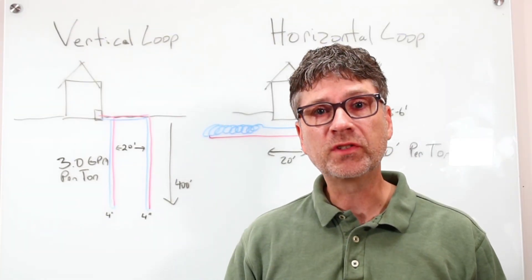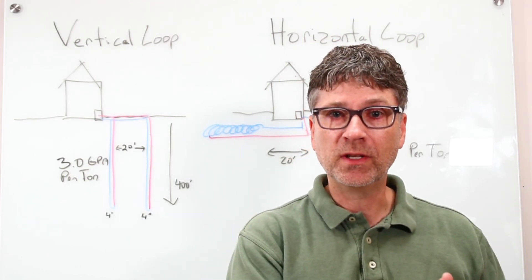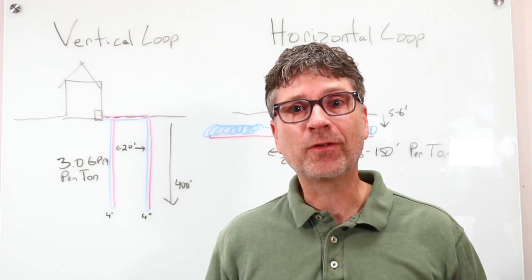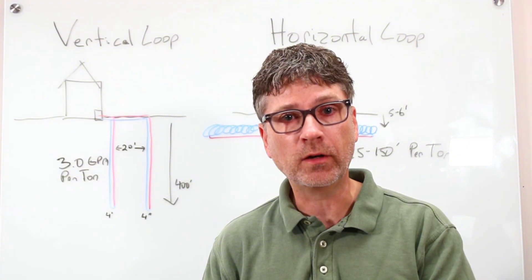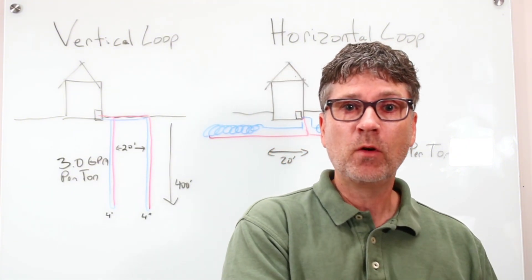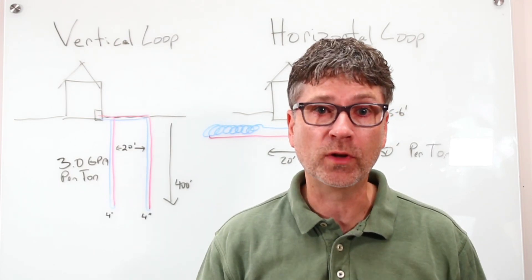In a closed loop system, water circulates from the loop to the geothermal system in the house and then back out. During AC operation, the heat from the house is transferred to the water, which then goes back to the ground loop to release the heat. When the water returns too hot, that's a sign that something is wrong with the loop.